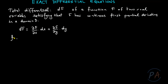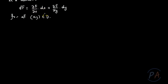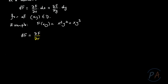For all (x, y) points in the domain D. Let's see an example. Let's write a total differential for a two-variable function. Let f(x, y) = x² y² + x y³. Then the total differential dF equals the partial derivative of f with respect to x times dx, plus the partial derivative of f with respect to y times dy. Now let's calculate the partial derivatives of f, starting with the partial derivative with respect to x.